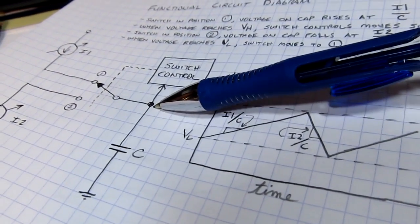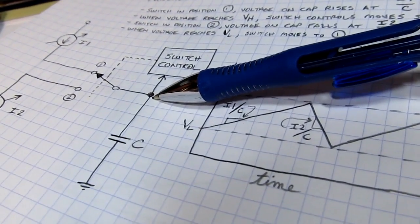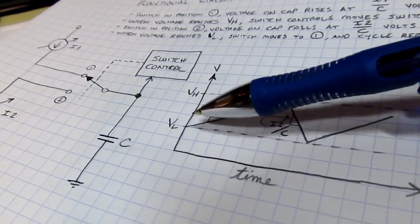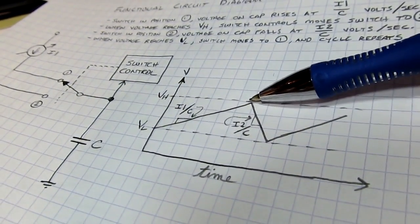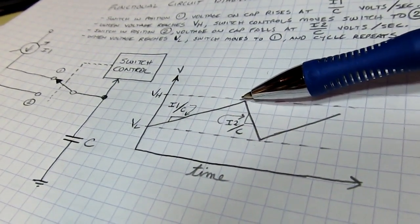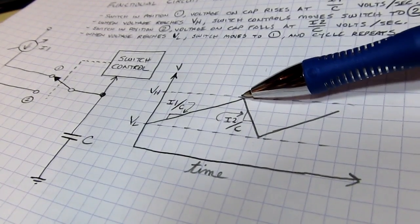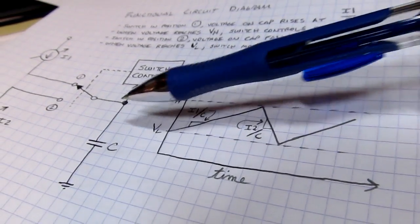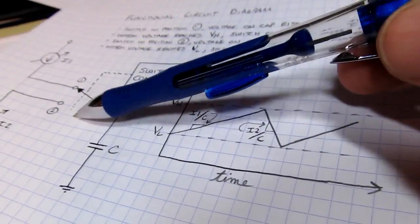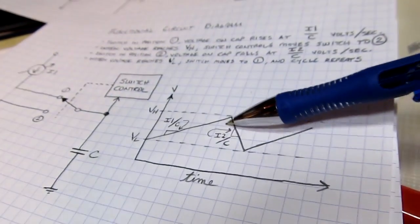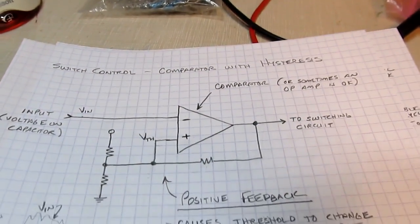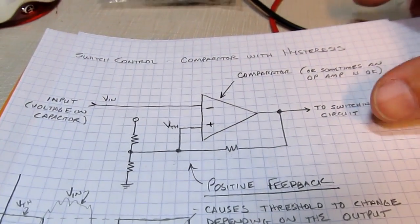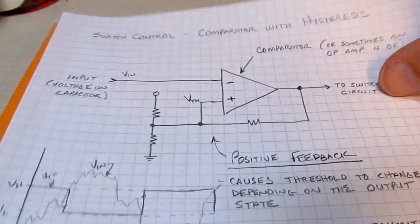In this circuit we monitor the voltage on the capacitor. When it reaches VH the comparator switches, knocks the threshold down to VL, and the switch reverses to discharge the capacitor. It then swings back down to VL, trips again, and the cycle repeats. That's how we use the comparator with hysteresis for the switch control.